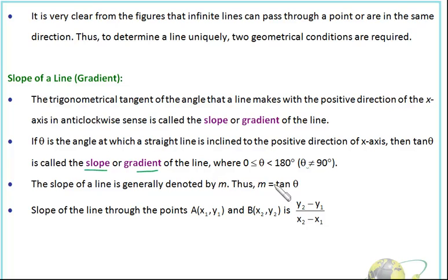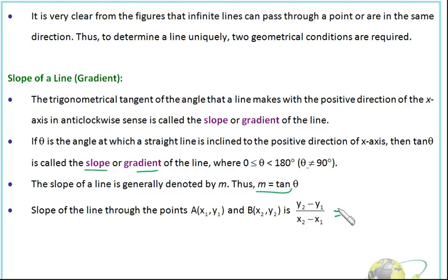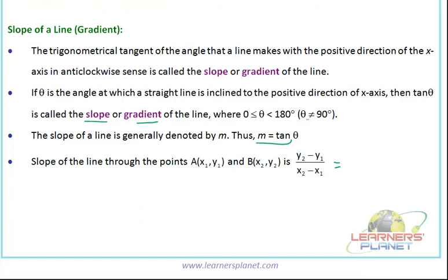Basically, slope is tan theta and the slope is denoted by M — that means M is equal to tan theta. The slope of a line through the points A(X1, Y1) and B(X2, Y2) is Y2 minus Y1 by X2 minus X1. That means the difference between ordinates divided by the difference between abscissas. We will see the derivation of this, so not to worry — as of now just keep this in mind: slope is the difference between ordinates by difference between abscissas.